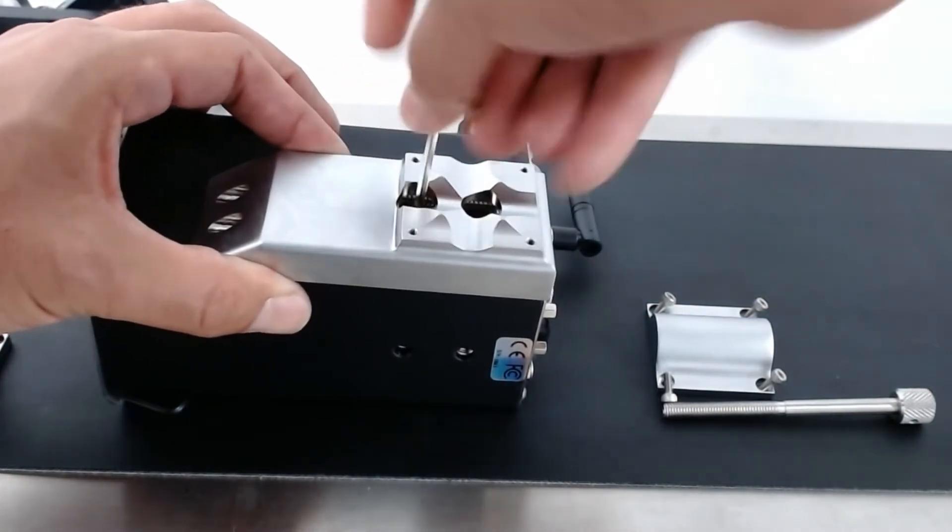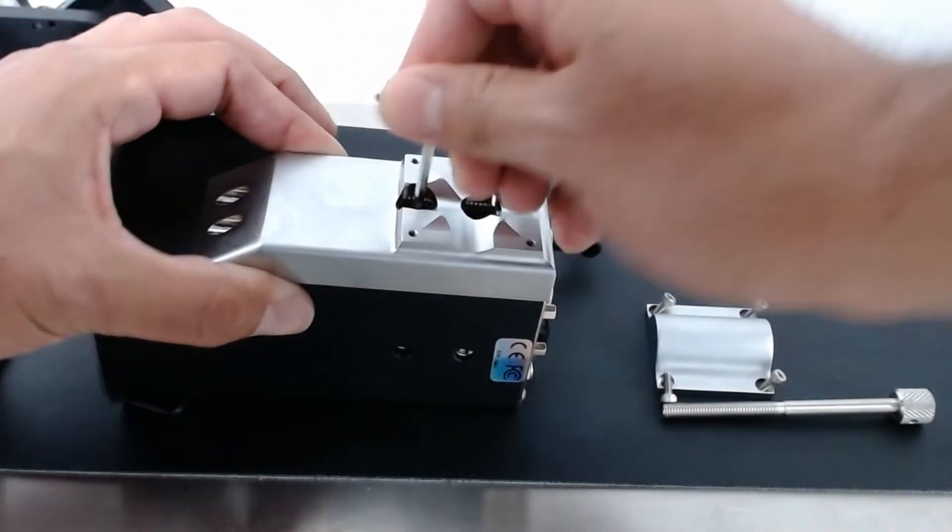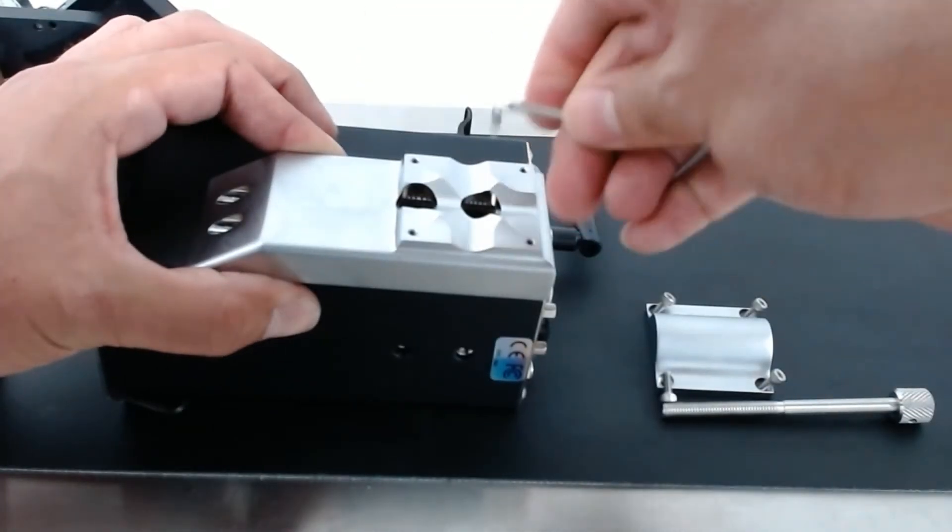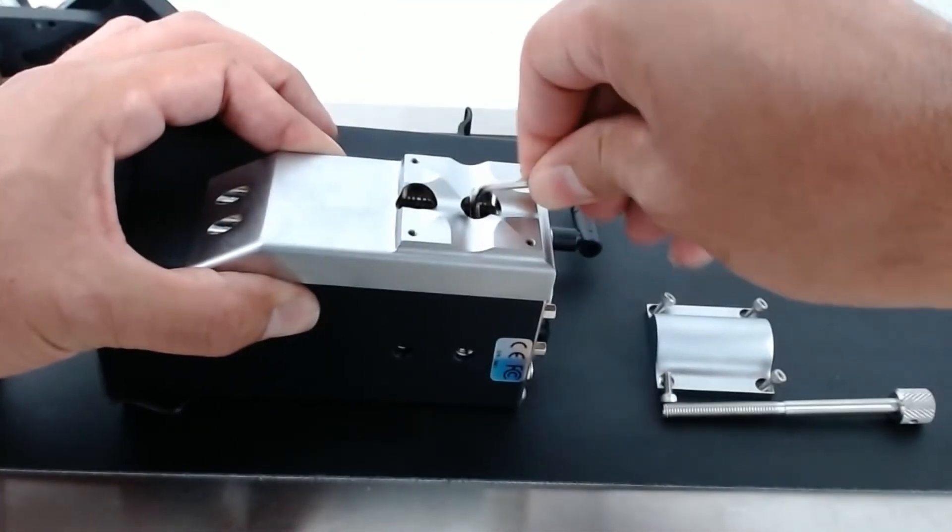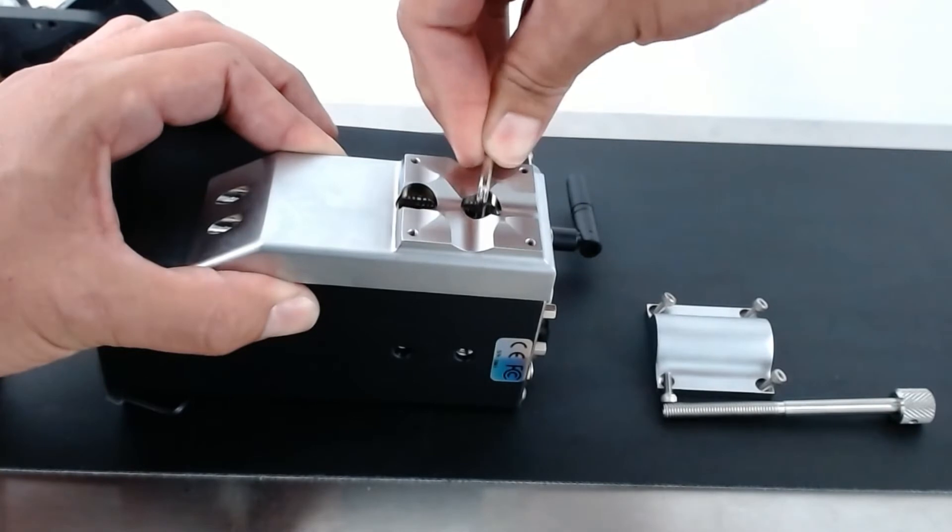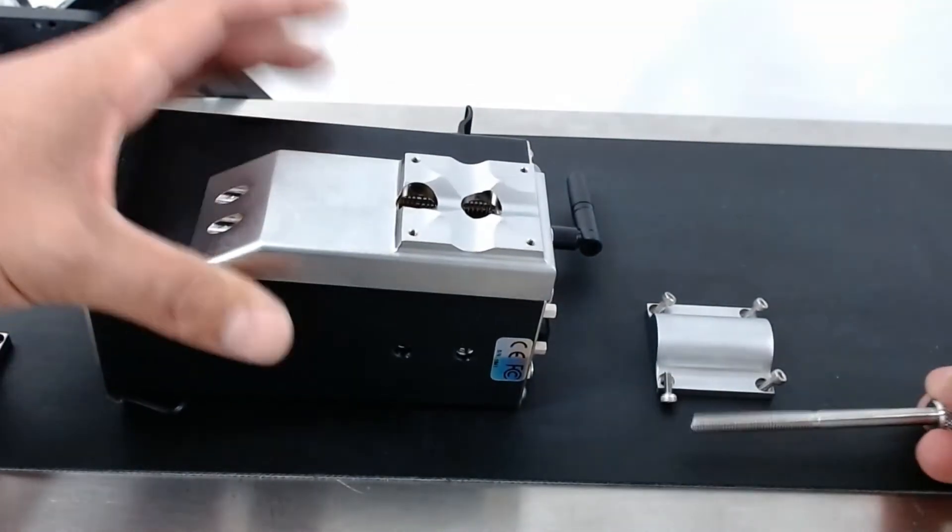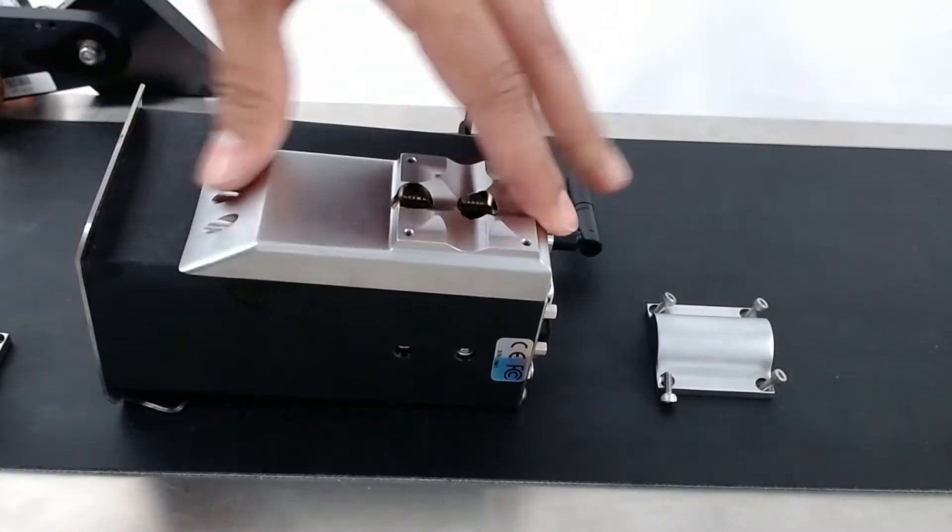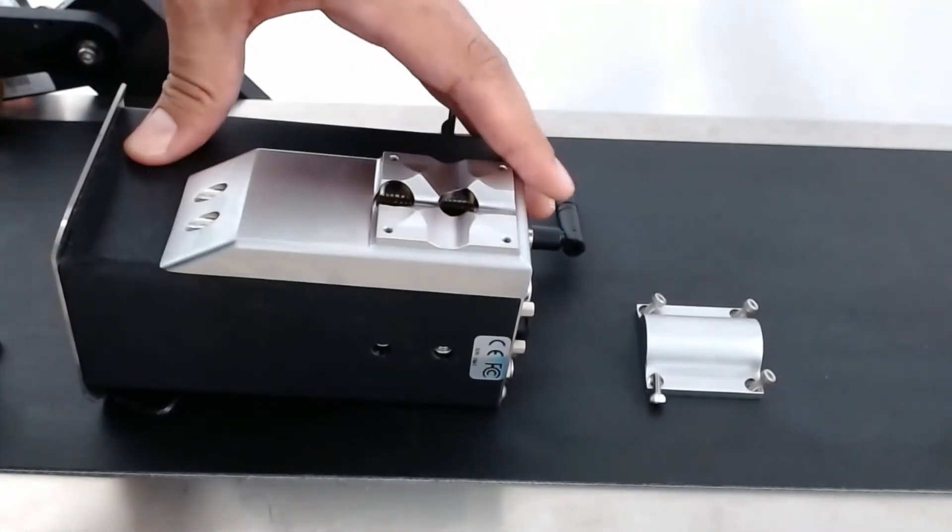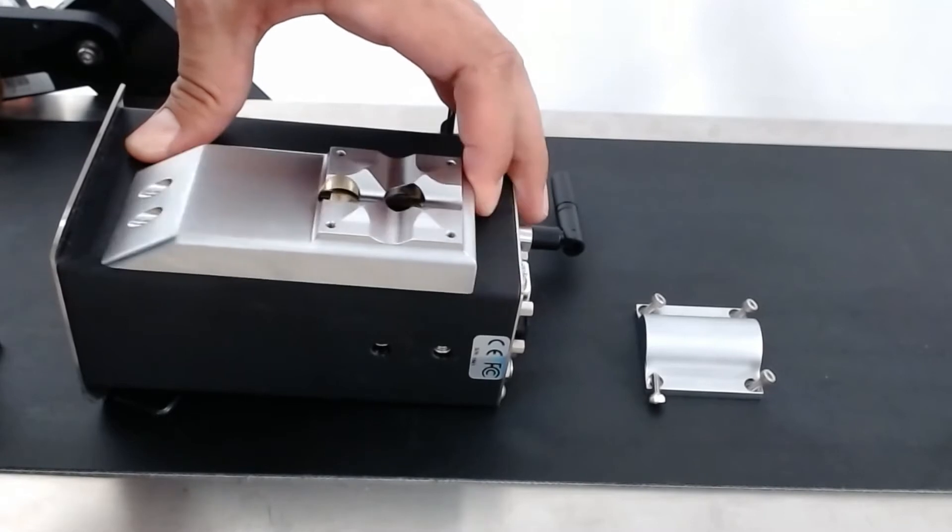And once you have both screws in, just go ahead and tighten them up nice and tight. Great. Now this is nice and tight and you'll see this moves now that it's on the printer. And this is that motion that's going to allow you to adjust your printer.